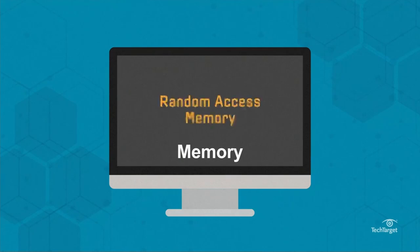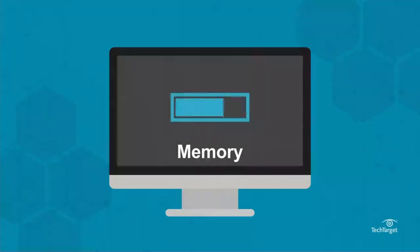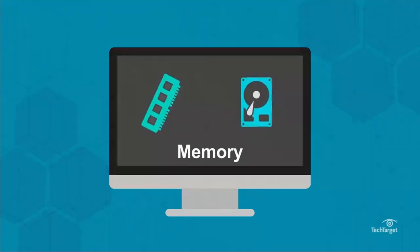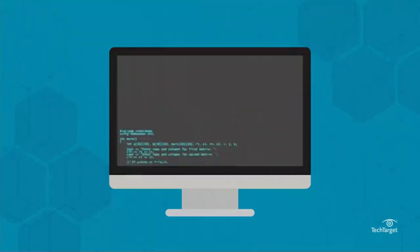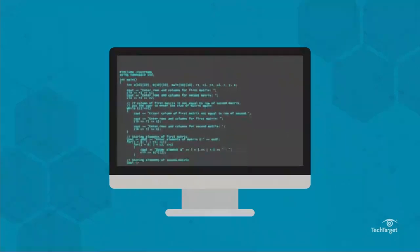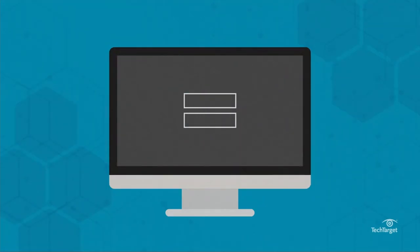Memory, referred to as Random Access Memory or RAM, is temporary data access. When a computer boots, it loads the data and applications it needs from storage into RAM. When the computer is turned off, the files return to storage. If a computer only had RAM and no storage, users would have to re-enter all the data and applications they wanted to use each time they logged on.